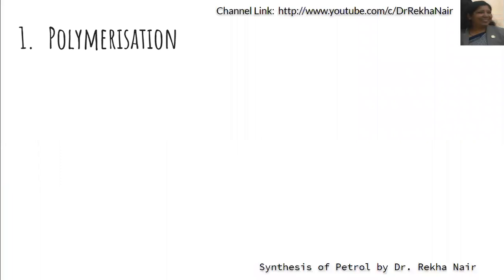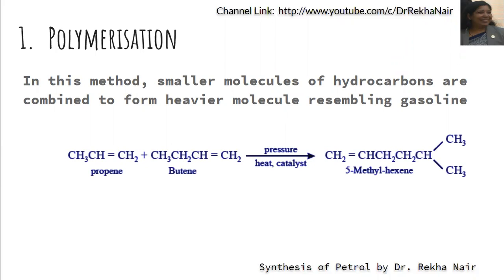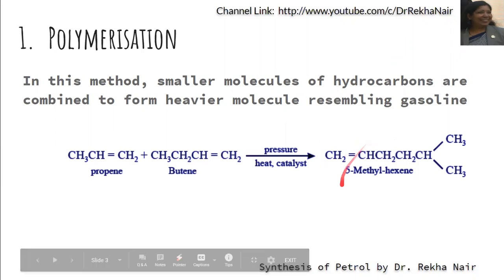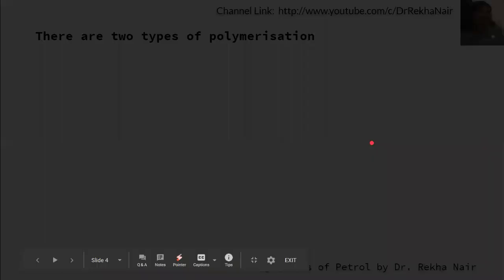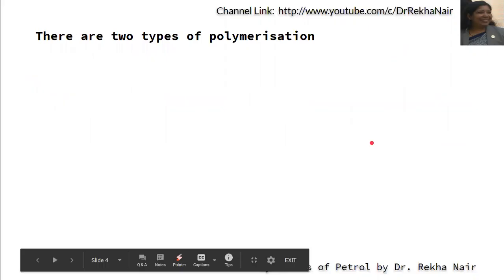First is the polymerization method. In this method, as the name suggests, smaller molecules of hydrocarbons are combined to get heavier molecules which resemble gasoline. For example, propene and butene under pressure, heat, and catalyst are converted into a compound resembling gasoline. There are two types: thermal polymerization and catalytic polymerization.